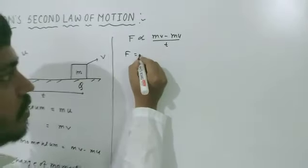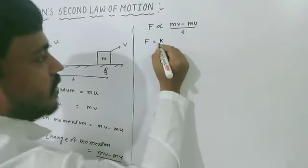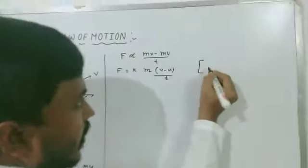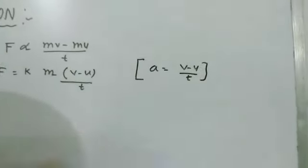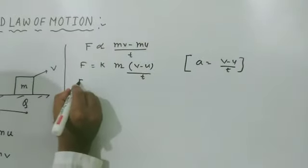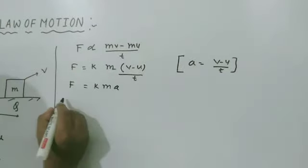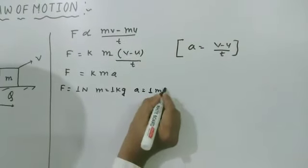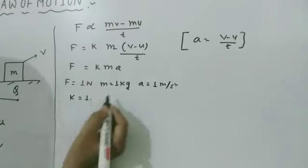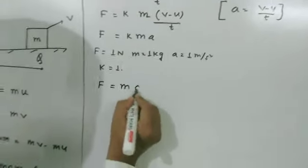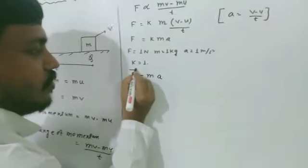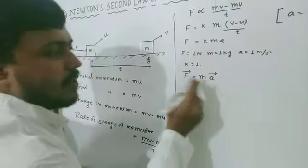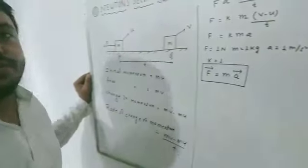According to the principle of proportionality, we remove the proportional sign and introduce a constant K. So F = K × M × (V − U)/T. Now, (V − U)/T is change in velocity over time, which means acceleration A. So F = KMA. Normally, if force is in Newtons and M equals 1 kg and A equals 1 m/s², then K equals 1. So finally, the mathematical expression for force is F = MA. Since force is a vector quantity and acceleration is also a vector quantity — but mass is a scalar — this is the vector form of Newton's second law of motion.